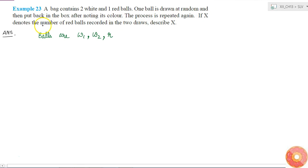If X denotes the number of red balls recorded in the two draws, describe it. Now it is said that there are two draws, so what are the possible outcomes in the two draws? What is our sample space? It can be: w1 w1, w2 w1, or w2 w2, or w1 r, w2 r, r w1.